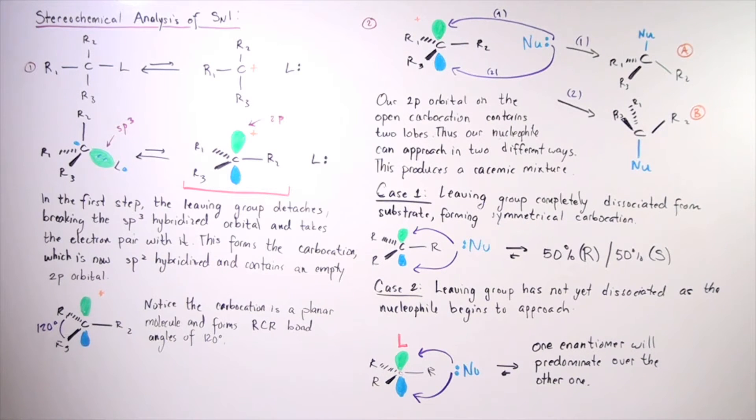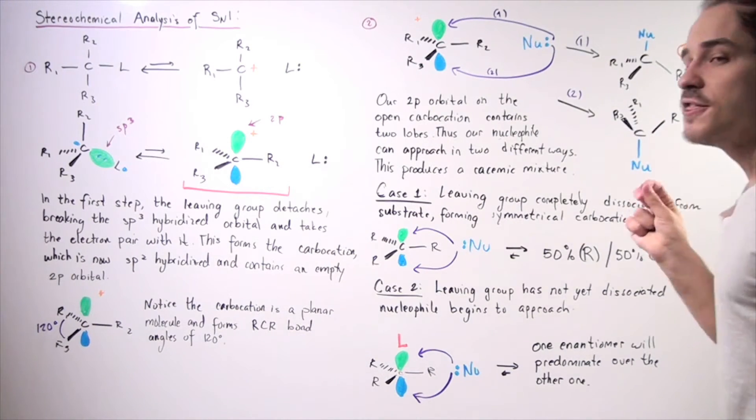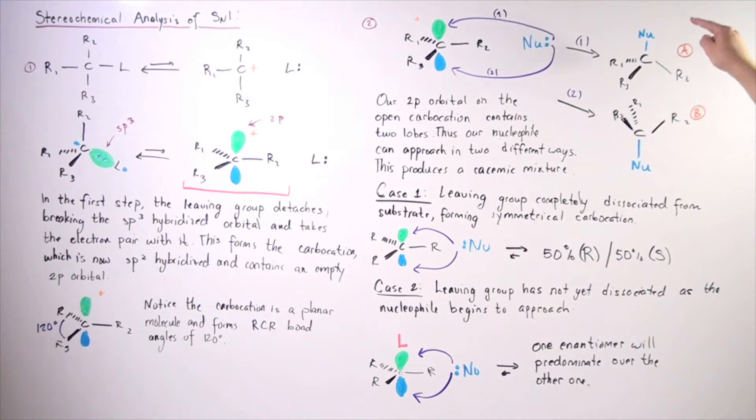So, what's the relationship between product A and product B? Well, they are actually stereoisomers. They are not identical, which means they're stereoisomers, and in fact, they're enantiomers. These guys are mirror images of one another.